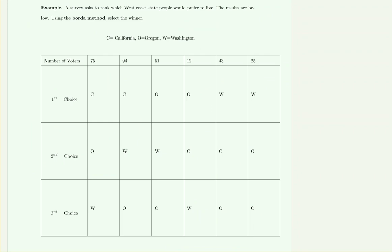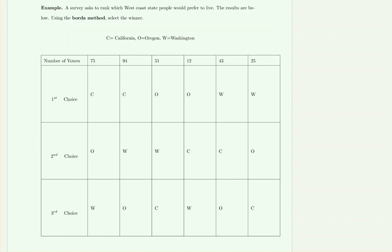Because the Borda method involves calculating points based on rankings, on quizzes and exams the tables will have extra space so you can fill in calculations. I recommend copying the table exactly as written with that spacing on your paper. In this first example, a survey asks people to rank which West Coast state they would prefer to live in.